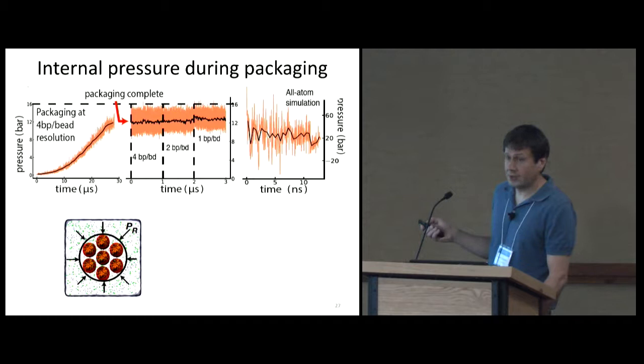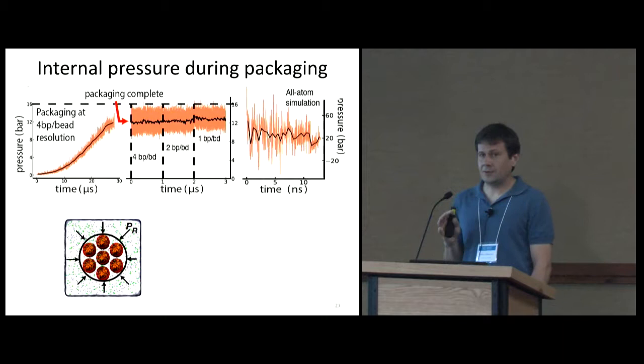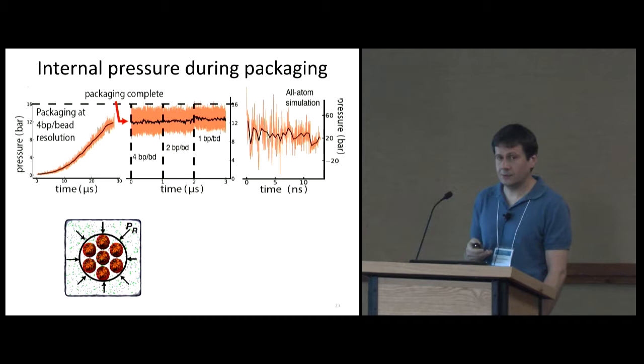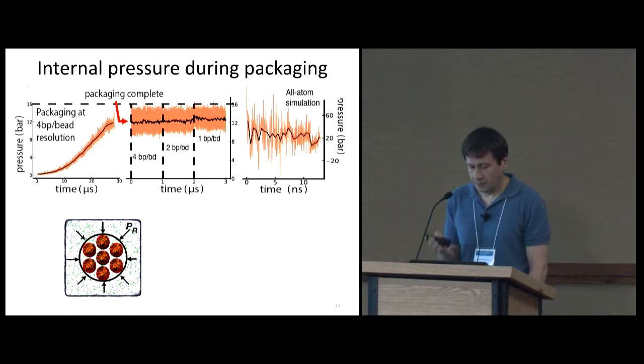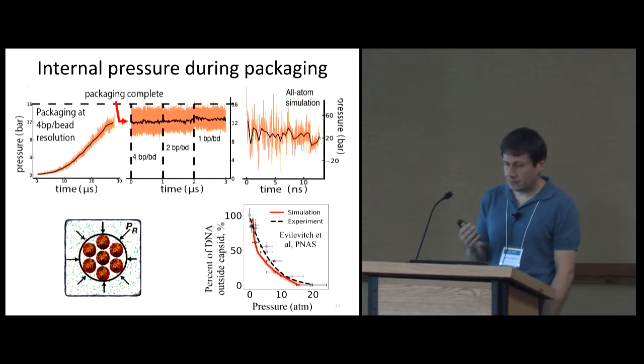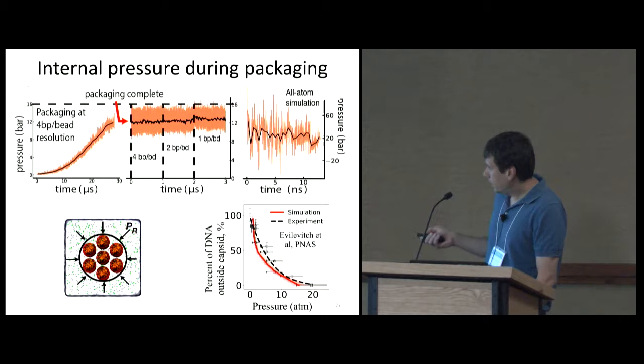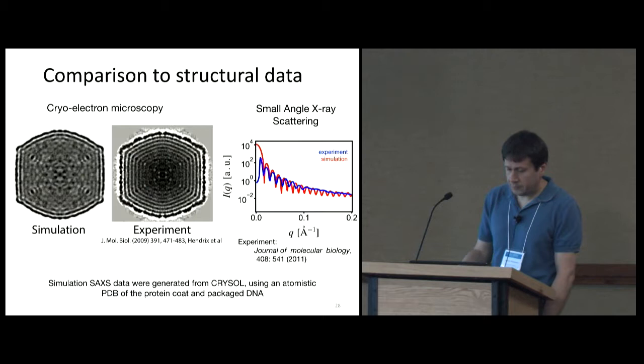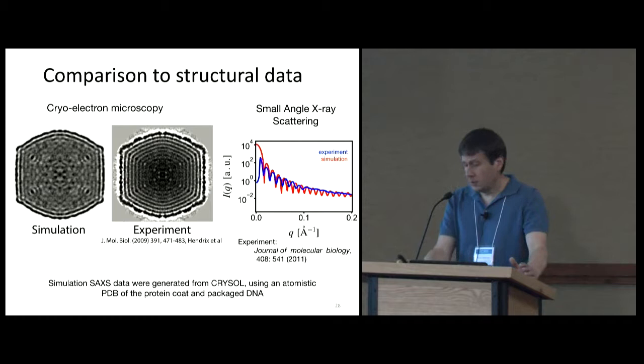This part actually took a lot of time going from coarse-grain to all-atom because the DNA is a very frustrated system. We had to match it precisely. This is really precise fitting and calibration. And how do we know that it worked? Because the pressure after we simulate it in full all-atom details basically is the same as in experiment and also as in a coarse-grain model. So we can actually directly compare the pressure to experimental data. Here the symbols are data from Alex Evilevich's lab. This is the theoretical curve. And this one is ours and it's right on.